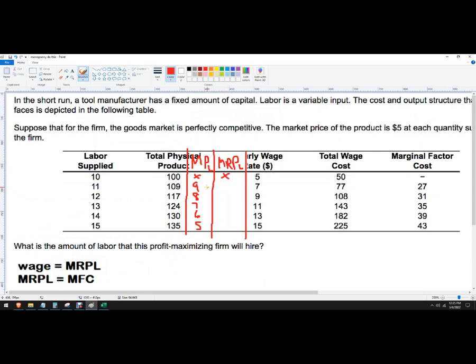So 9 times 5, we're told that the price of the product is 5, so that's 45, 40, 35, 30, and 25.